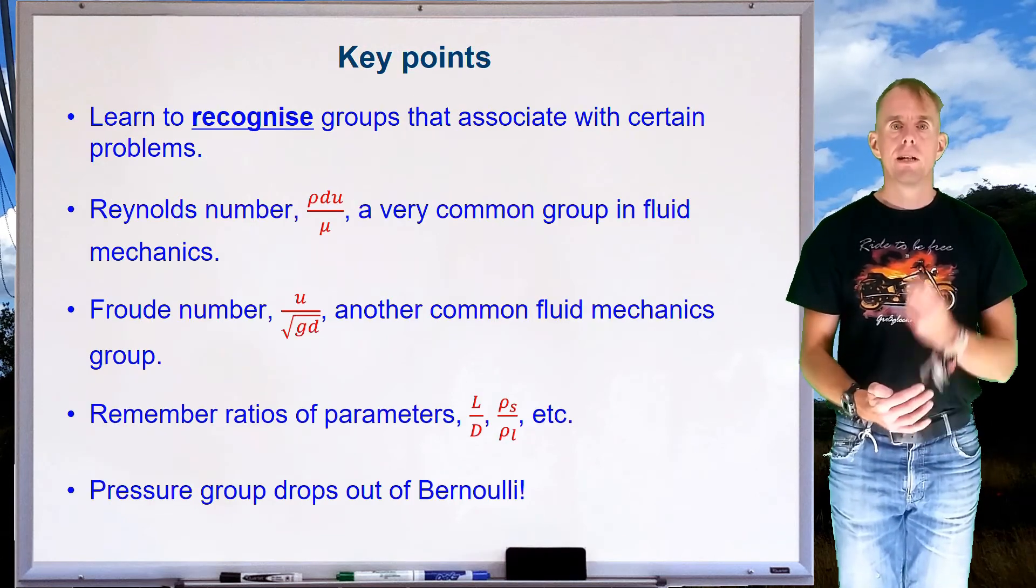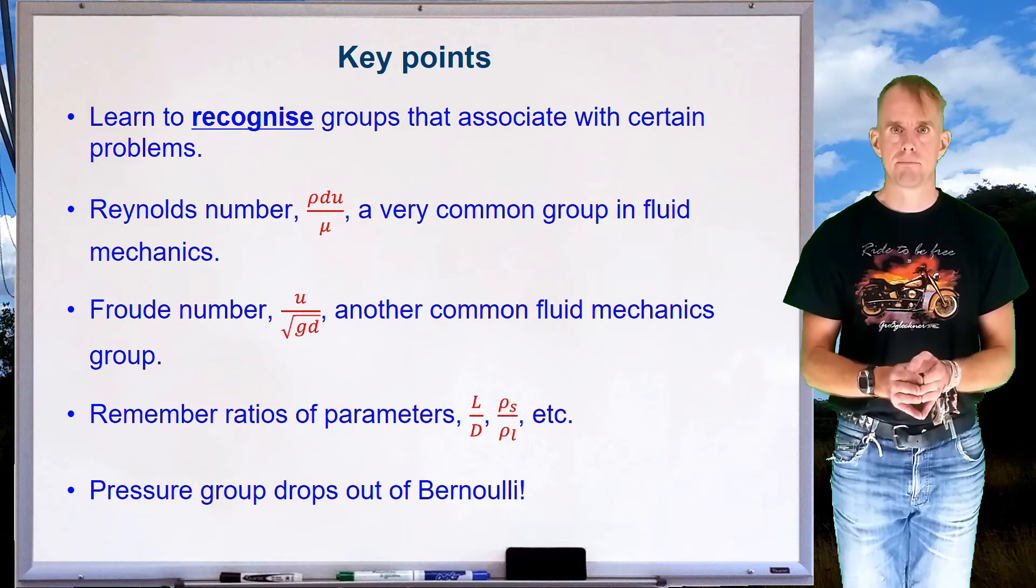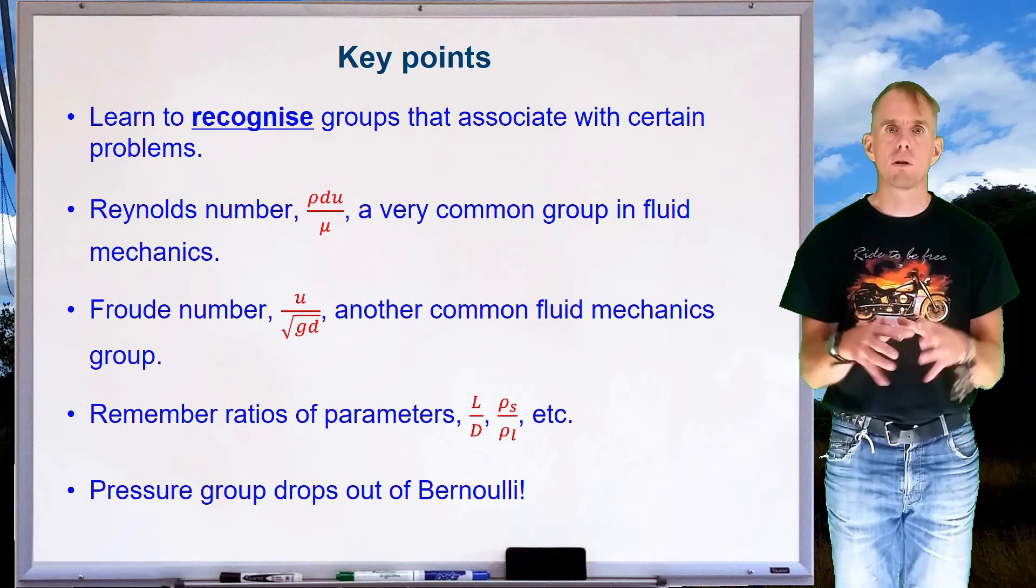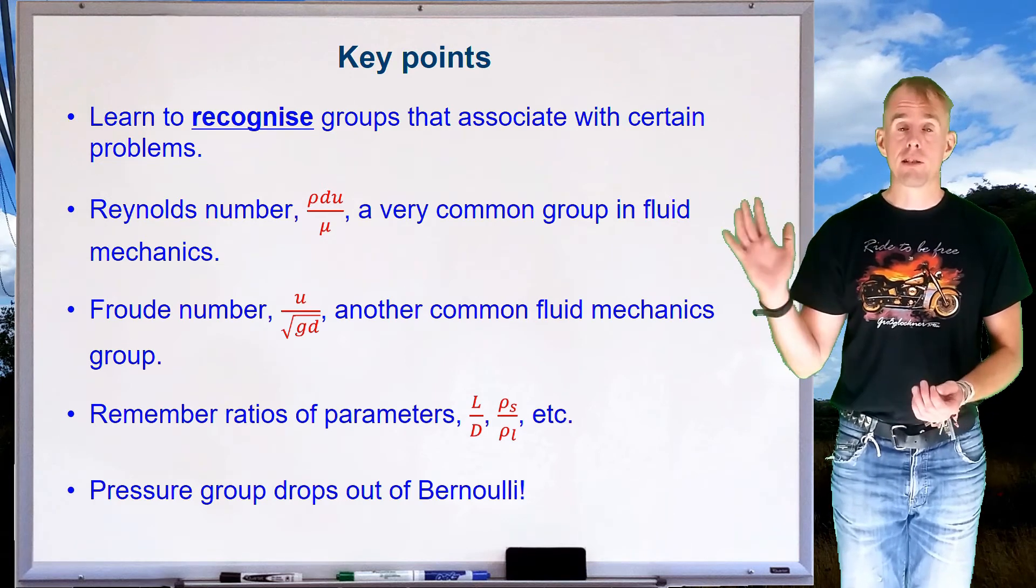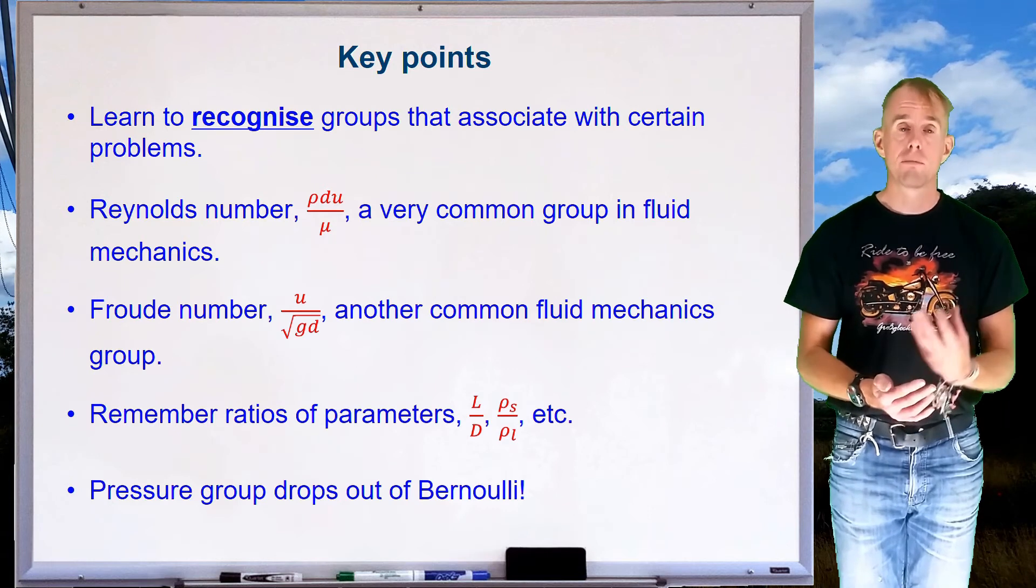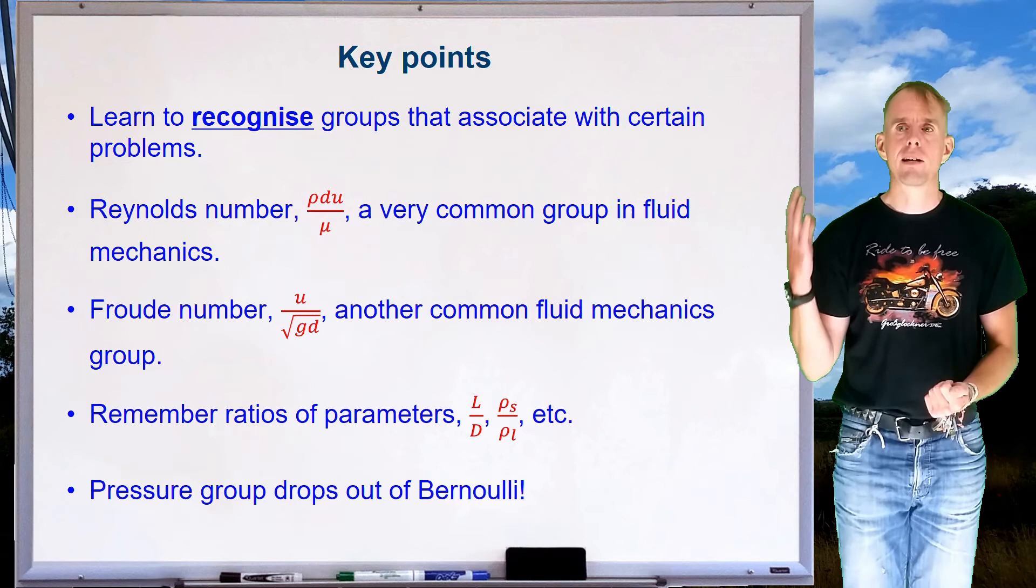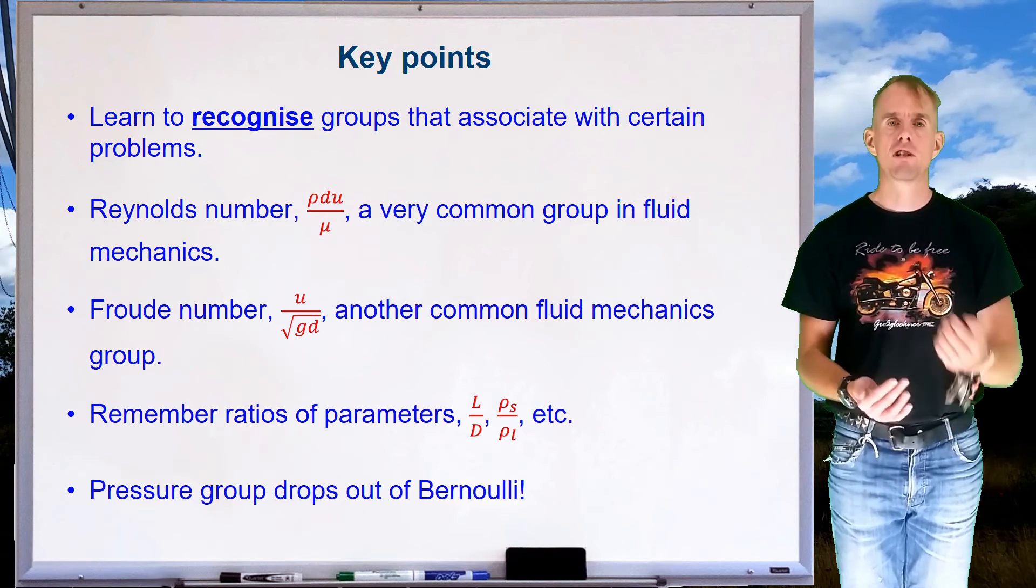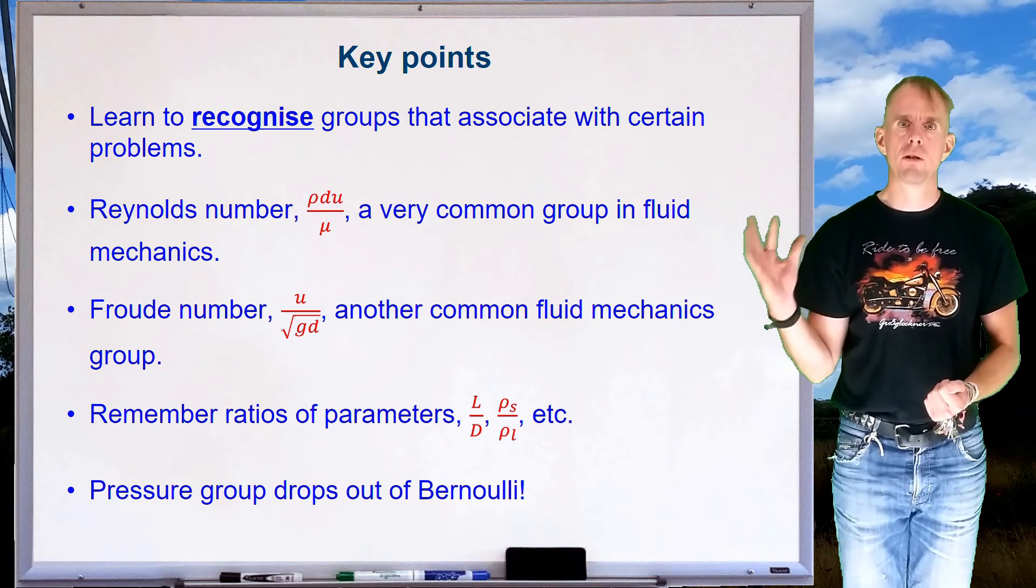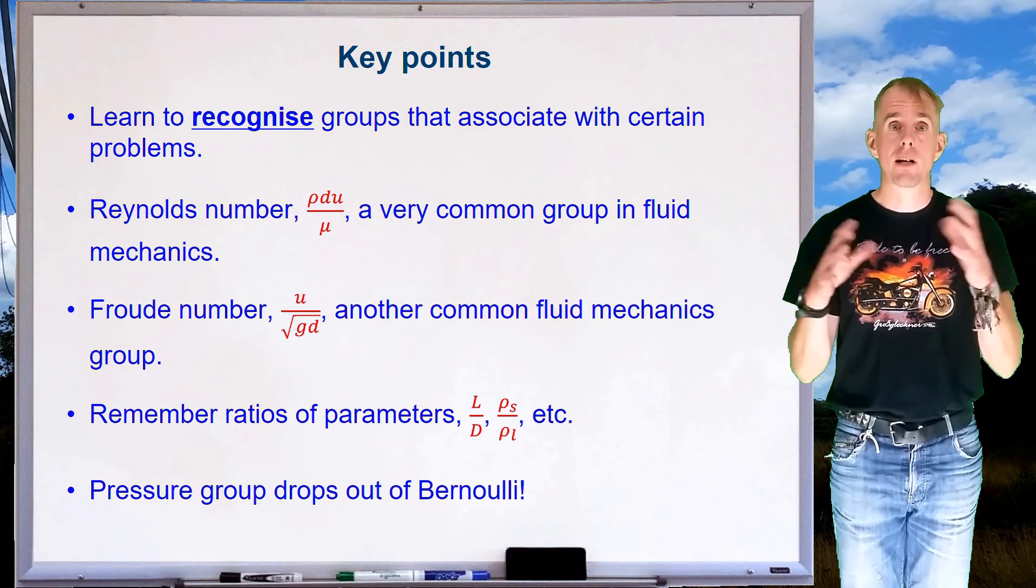Let's recap a few key points. The key point that I want to try and get across is learn to recognize which groups are associated with which problems, and what they physically mean. The more you can develop that insight, the quicker you can get not only your dimensionless groups formed, but also your mental model around what's actually important in the problem. The Reynolds number is a very common group in fluid mechanics problems. So, look for it if you have a fluid mechanics problem. The Froude number is another common dimensionless group when you have kinetic energy to potential energy transfer. Again, look for it if you've got things rising or things falling. Don't forget very easy to form groups. Ratios of lengths, ratios of densities, ratios of viscosities, and so on and so forth. If you've got a problem involving pressure, don't forget that trick with the Bernoulli equation. Divide the pressure term by one of the other terms in Bernoulli, either ρu² or ρgh, and you will get a dimensionless group involving pressure.